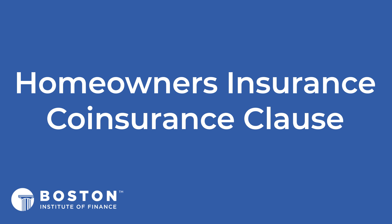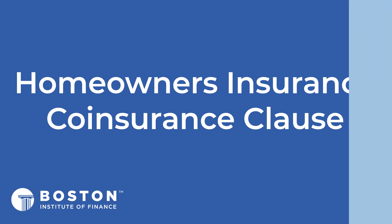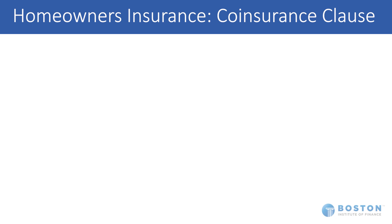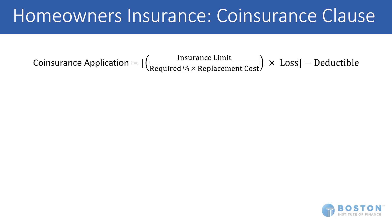That feature is the coinsurance clause. Basically, the coinsurance clause requires that the dwelling coverage be maintained at a certain minimum percentage of the home's replacement cost in order for a partial loss on the dwelling to be covered in full.